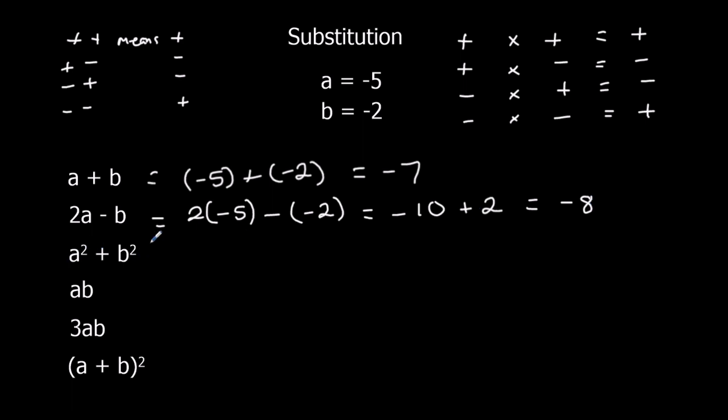A squared plus B squared. So I've got minus 5 squared plus minus 2 squared. So squared means multiplied by itself. So I've got minus 5 times minus 5. Negative times a negative is a positive. So that's 25 plus 4, which is 29.